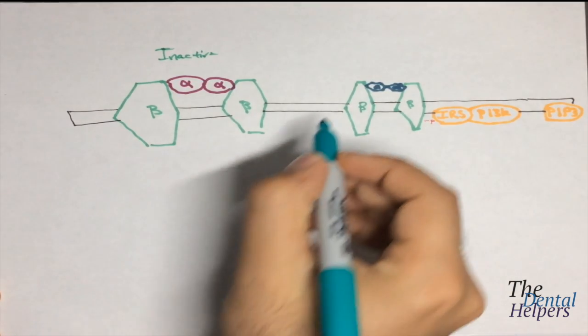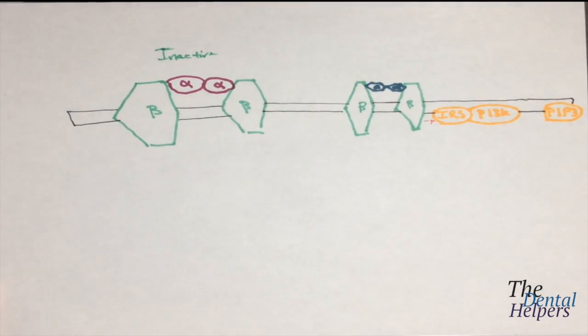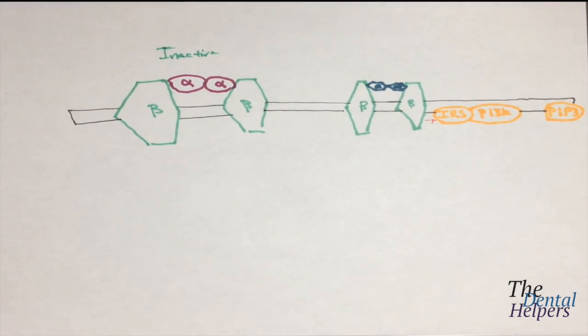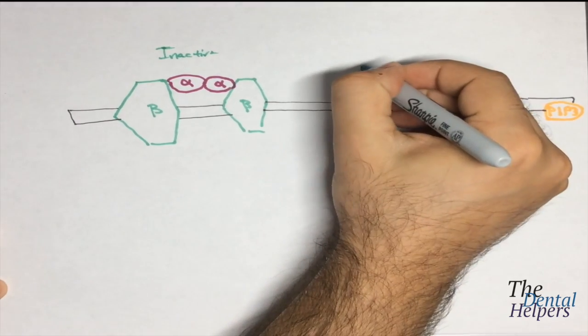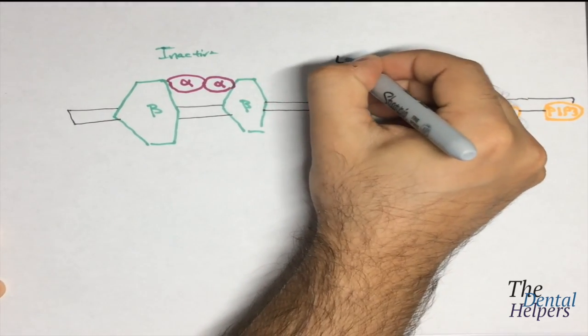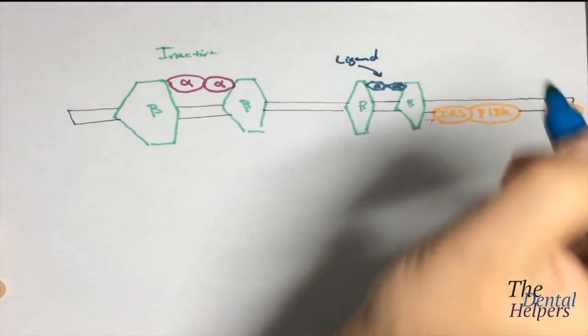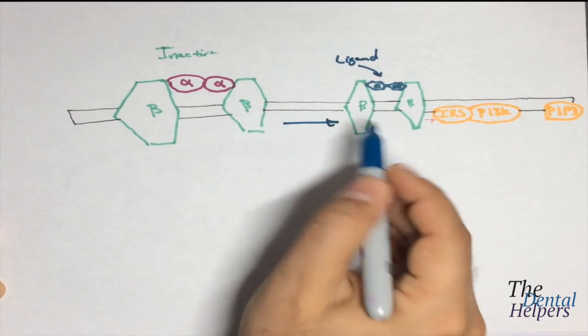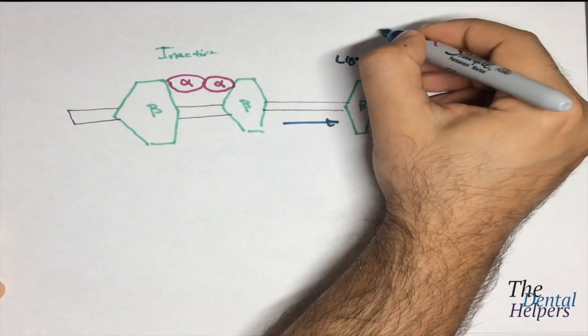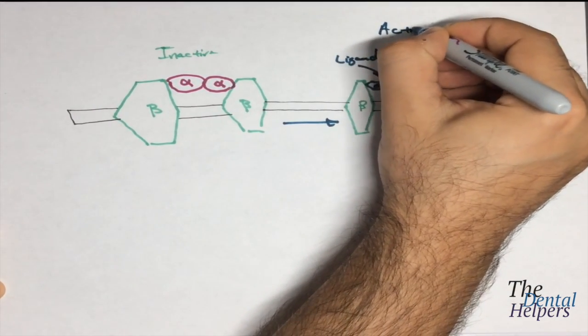And what happens is a ligand will come in, and when the ligand comes in, it causes a conformational change and allows the insulin receptor to become in the active state.